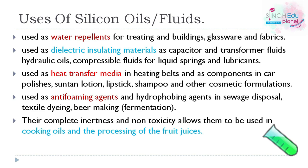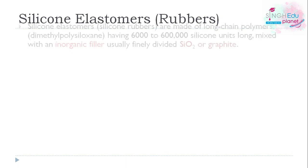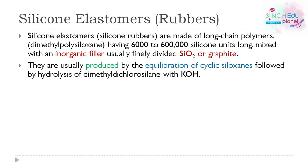Next we discuss silicon elastomers or rubbers. These are long chain polymers having 6,000 to 6,000,000 siloxane units. They are mixed with inorganic fillers, usually finely divided silicon dioxide and graphite, which are necessary for their mechanical properties. These are usually produced by the equilibration of cyclic siloxanes.